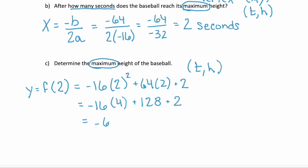Or negative 64 plus 130, and that simplifies to 66. 66 what? Well, we're asked to find the height. We know that height for this problem is measured in feet. So this is 66 feet. So 2 seconds after the baseball is hit, it reaches the maximum height, which is 66 feet. All found using that vertex formula.